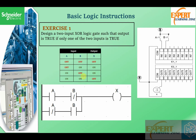For the first exercise, we should design a two-input XOR gate such that the output is true only when one of the inputs is true. This is the truth table: the output is true only if one of the inputs is true, which means that when both are true or when both are off, the output is off.